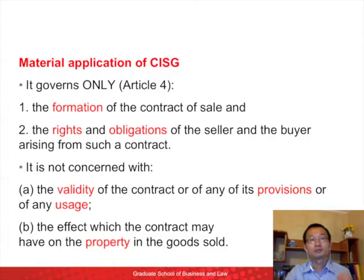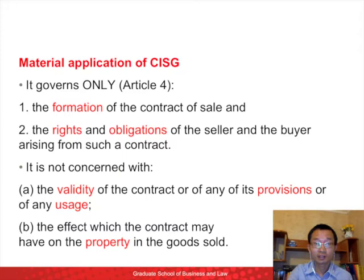In the previous slide, we focused on the geographical application of the Convention, which requires internationality of a contract. In the following section, we will look at the material application of the Convention. Article 4 clearly stipulates it governs only the formation of the contract of sale and the rights and obligations of the seller and the buyer arising from such a contract.